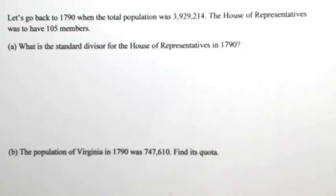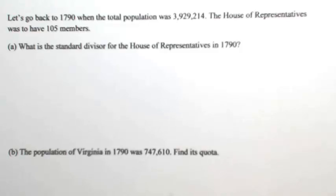Let's go back to 1790 when the total population was 3,929,214. The House of Representatives was to have 105 members. Part A: what is the standard divisor for the House of Representatives in 1790?